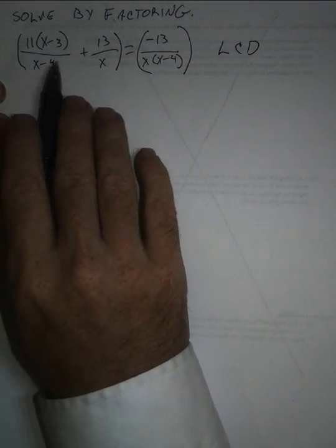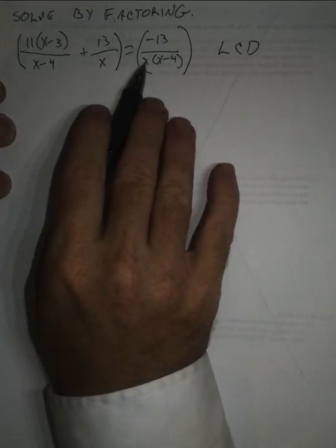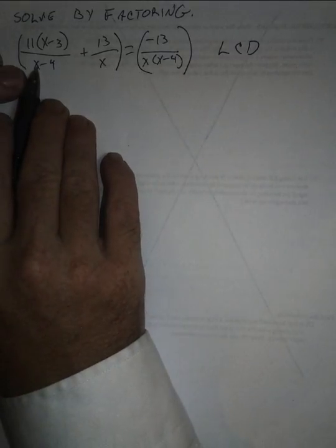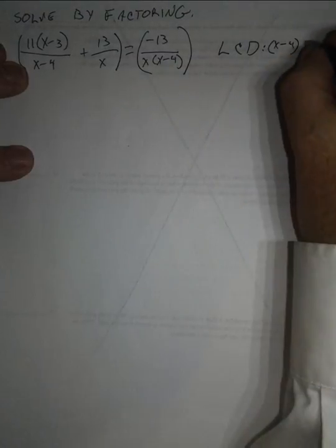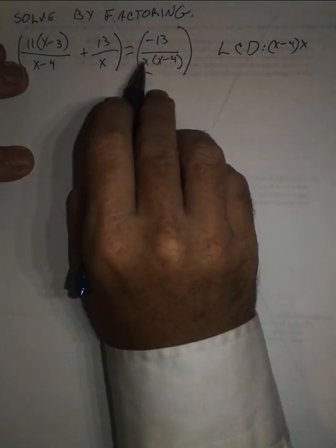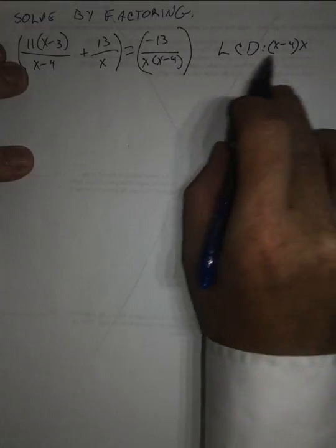In this case, your denominator of each of these contains—if I want to find the greatest common factor of all of these denominators, my lowest common denominator I start with, I need an x minus 4. I also need an x. And over here I already have an x and x minus 4. So that's all I need. That's my lowest common denominator. So I'm going to multiply both sides by the lowest common denominator.